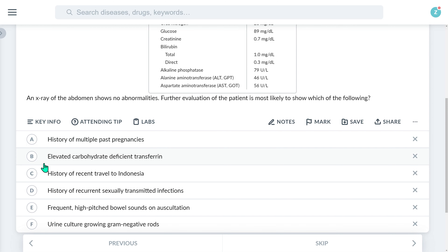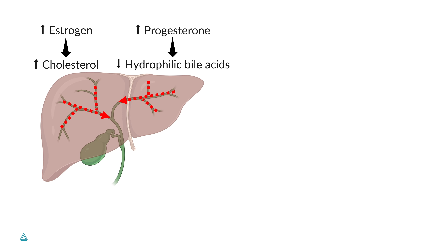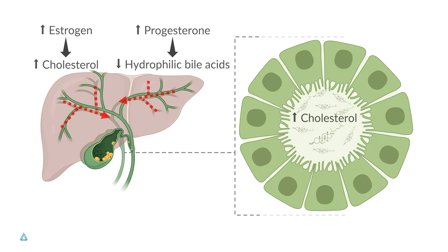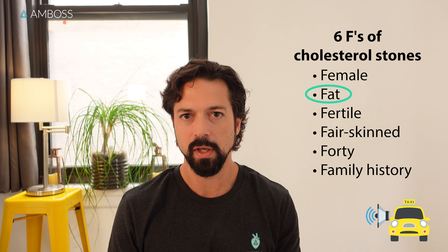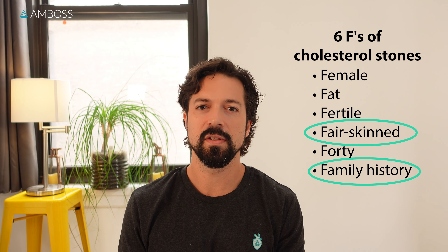Let's answer the question. Looking through the options, a history of multiple past pregnancies would match the fertile risk factor we mentioned. The risk of gallstone disease is about 10 times greater among multiparous women than nulliparous. This is due to high estrogen levels during pregnancy that increase the secretion of cholesterol into bile, while high progesterone levels decrease the production of hydrophilic bile acids, resulting in a decreased ability of bile to separate from cholesterol. The combination of these effects leads to the supersaturation of bile with cholesterol, which predisposes the patient to gallstone disease. The same mechanism also explains why women — who have more estrogen and progesterone — are more likely than men to have gallstones in general. Being overweight is associated with hypercholesterolemia and potentially higher estrogen levels in some cases.